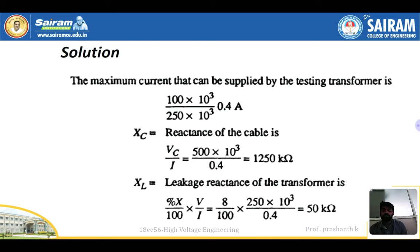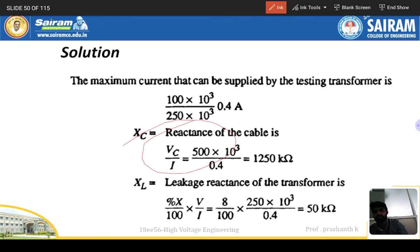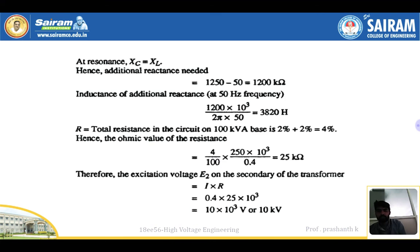The transformer reactance Xl is calculated as: percentage X divided by 100, multiplied by V over I. Since 8% is given, that is 0.08. With I = 0.4 A and voltage 250 kV, the transformer leakage reactance is 50 kilohms. Note: 8% means 0.08 — no confusion there.